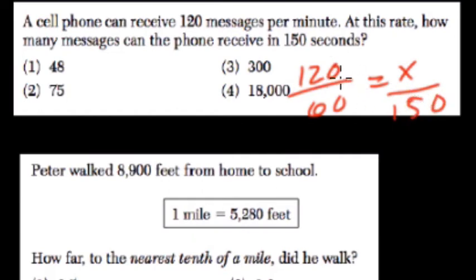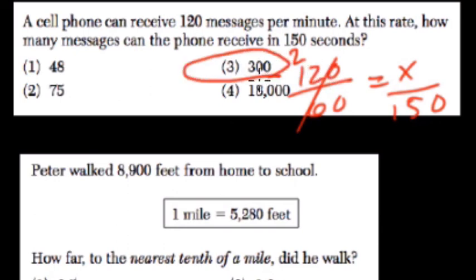120 over 60 is 2, so X over 150 is 2. Multiply both sides by 150, and we get 300.